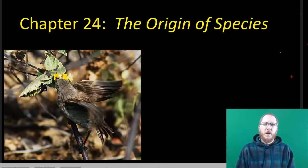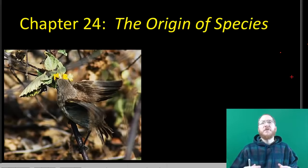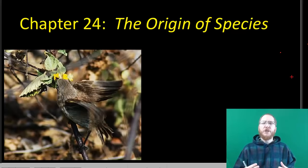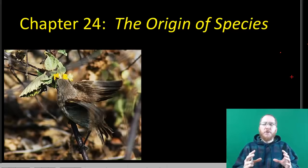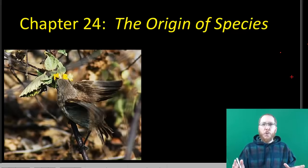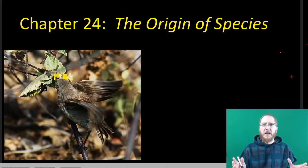Welcome to chapter 24, which is going to focus a lot on the idea of speciation. So we've talked about microevolution, which is going to be the kind of generational changes bit by bit. But if you add up enough of those microchanges, you get what we call macrochange. So it's not anything new, it's more just a matter of the scope of time you're looking at.